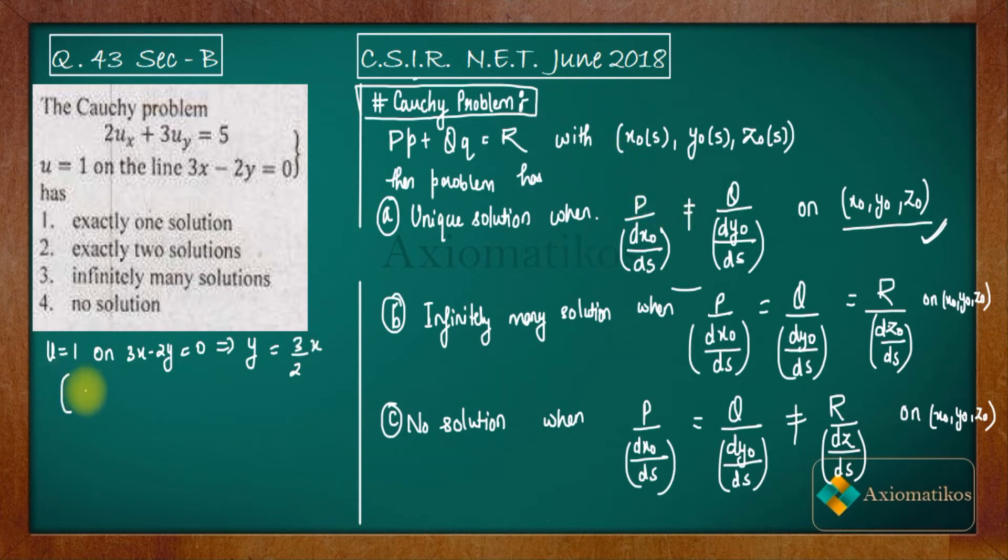Initial condition will be like this. Let us say x is a function of s and it is equal to s we are writing. So what will be y? It will be 3/2·s. What will be u? u will be just 1. Instead of z₀ we have this u₀. So this is the initial point that is given to us. Now this is your Cauchy problem.